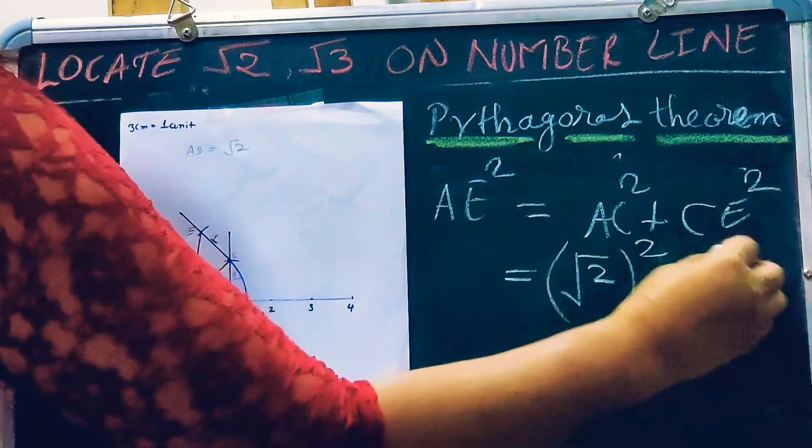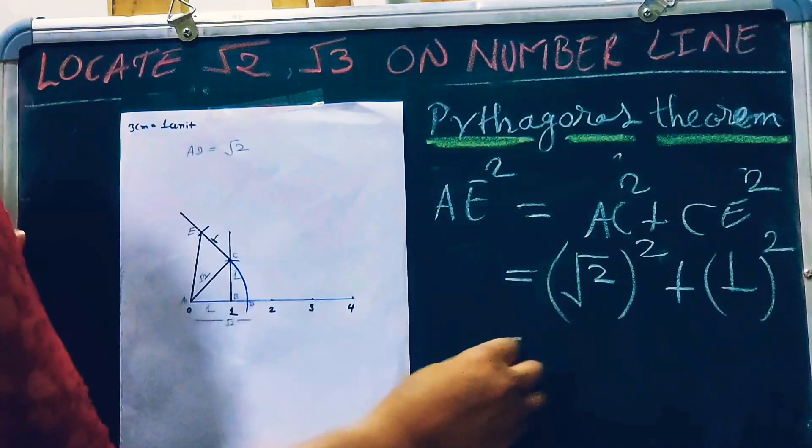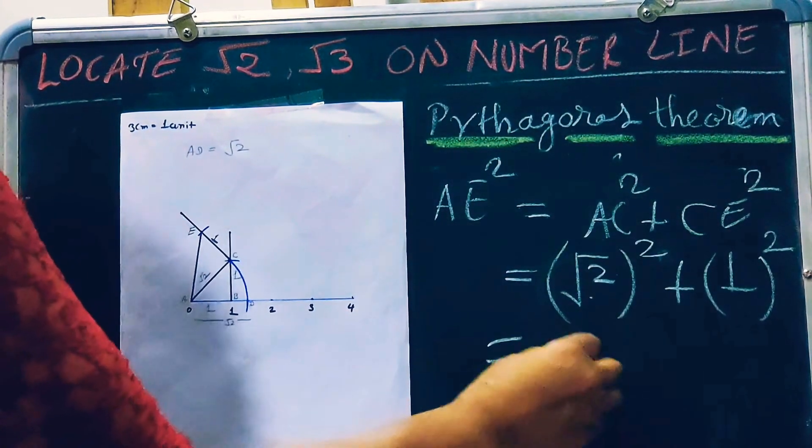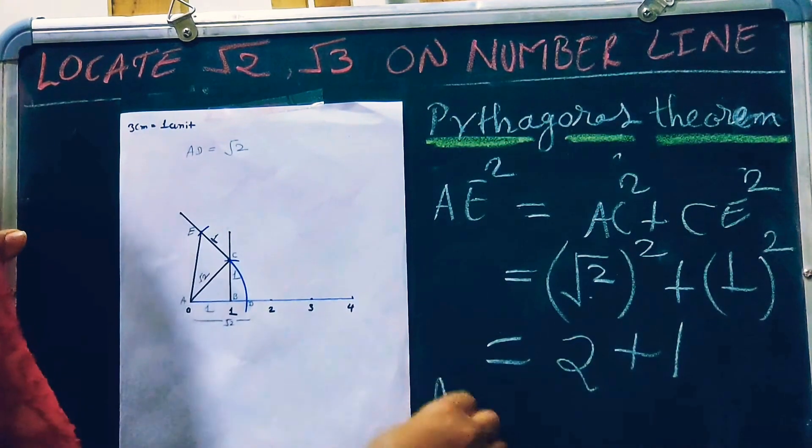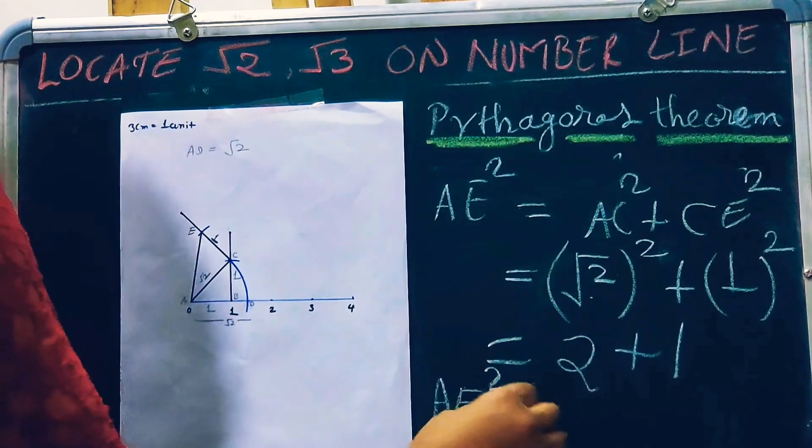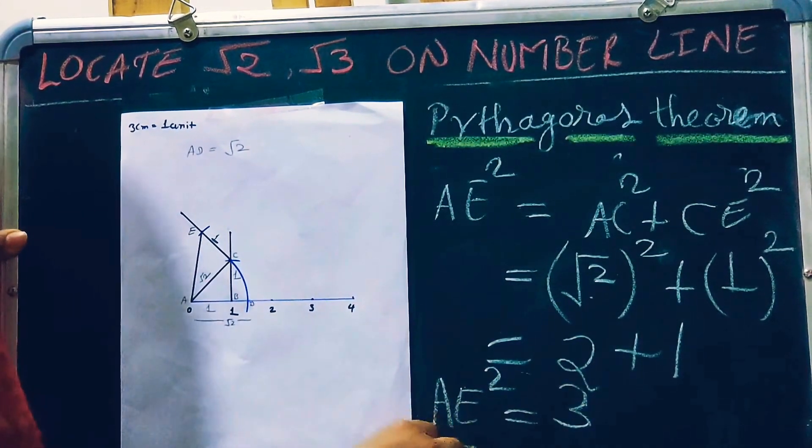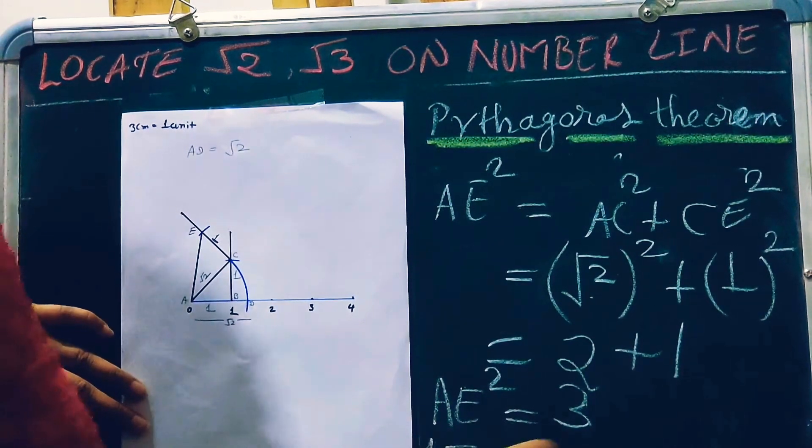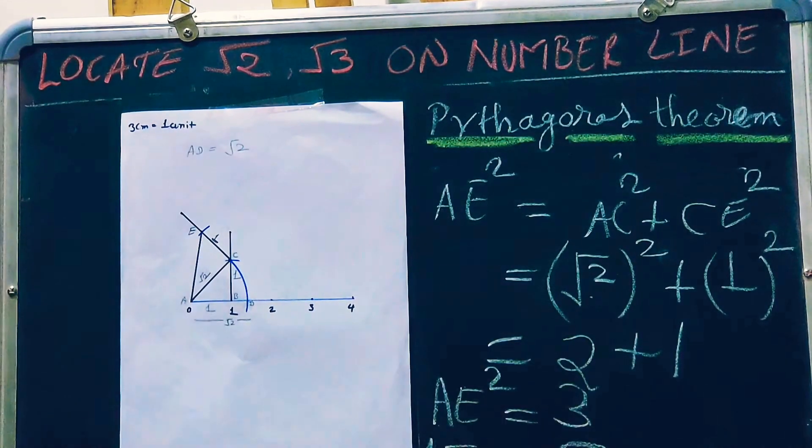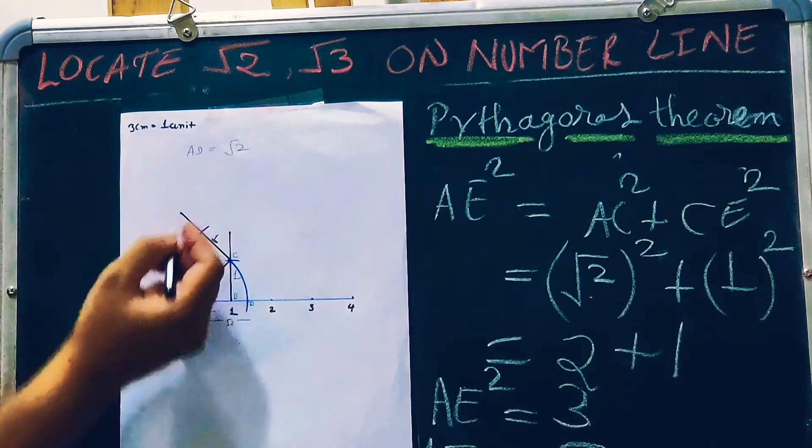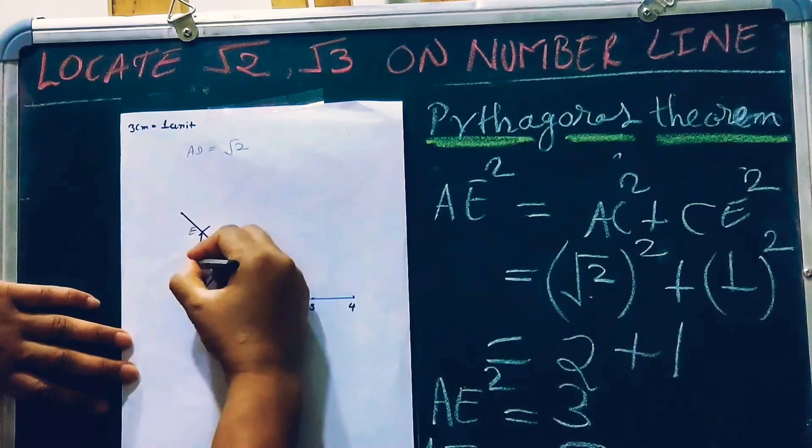Root 2 whole square is equal to 2 plus 1. So AE square is equal to 3, and AE is equal to root 3. The length of AE is equal to root 3.